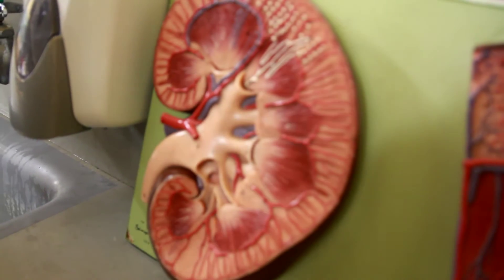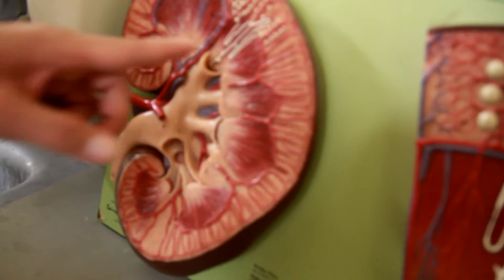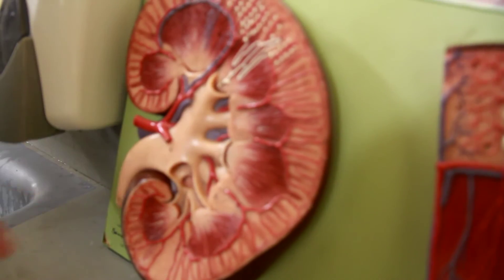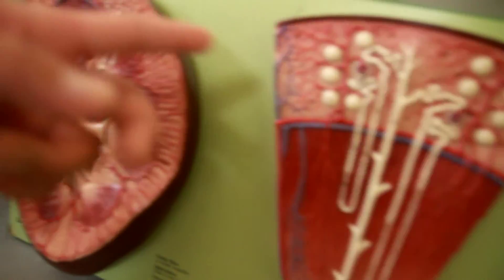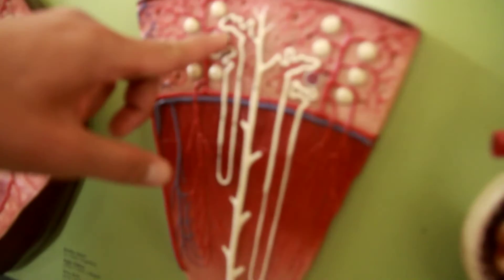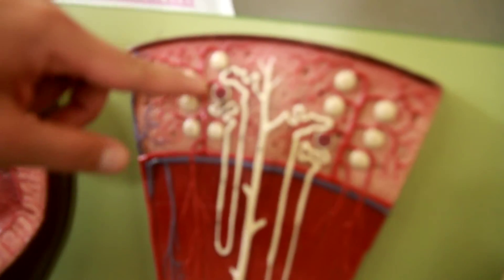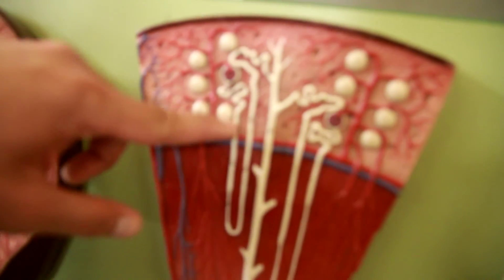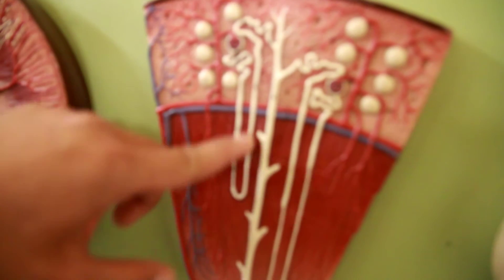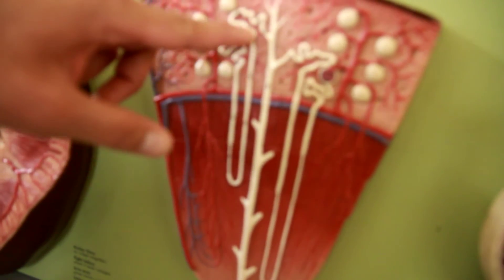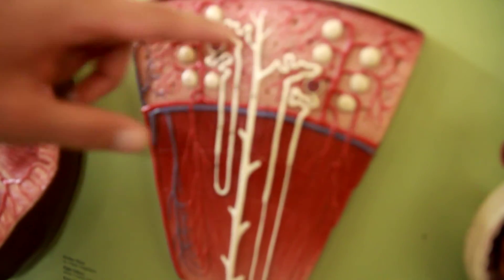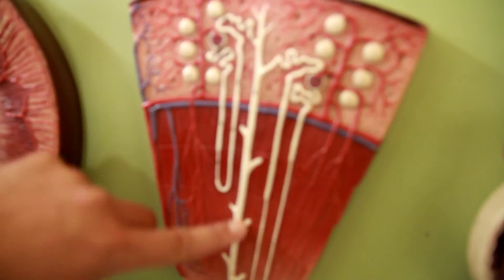Now we go for the renal arteries, or the nephron. You have the glomerular capsule, which is the yellow surrounding the glomerulus inside, which goes into the proximal tubule, which extends down to the loop of Henle, goes up into the distal convoluted tubule, and then finally the collecting duct.